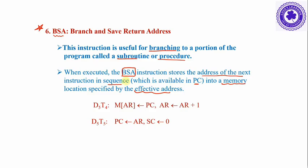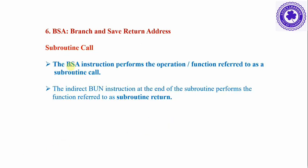The next instruction address available in the PC is stored into memory at the effective address location. Then that address location is incremented, assuming the immediate next instruction will be the subroutine start address, and that subroutine address is stored into the PC so the next instruction executed is the subroutine. For a subroutine call, the BSA instruction performs the operation referred to as subroutine call.